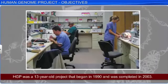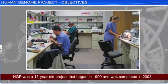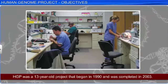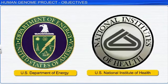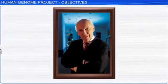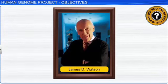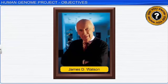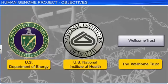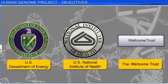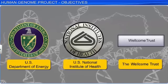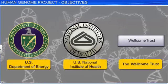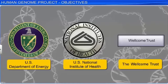The HGP was a 13-year project that began in 1990 and was completed in 2003. It was coordinated by the US Department of Energy and the US National Institute of Health. Initially, it was James D. Watson, one of the co-discoverers of the double helix structure of DNA, who headed the project. However, in the initial years of the HGP, the Wellcome Trust of the UK became a major partner, though more contributions arrived from countries such as Japan, France, Germany, and China, to name a few.